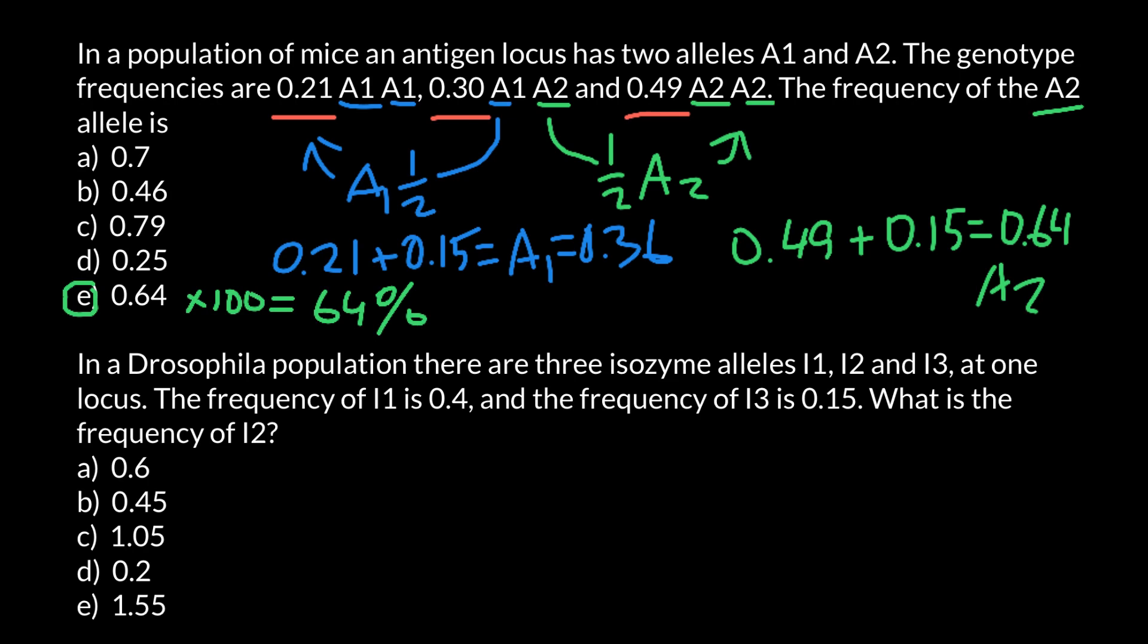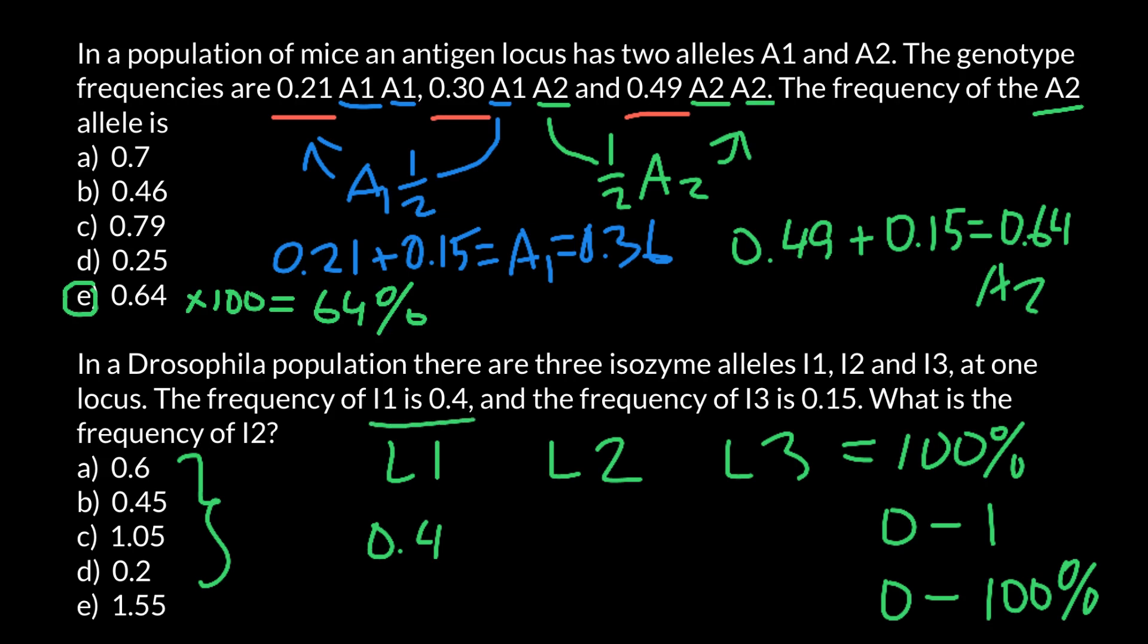So basically it is very easy. We have only three alleles: L1, L2, and L3, which in sum would make 100%. And as you see, all our answers are given not in percentage form, but on the scale between 0 and 1. So we can do our calculations on either scale. We know that frequency of the L1 allele is 0.4 and frequency of the L3 allele is 0.15.